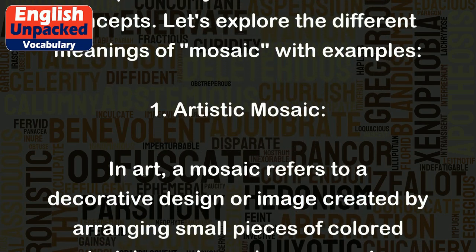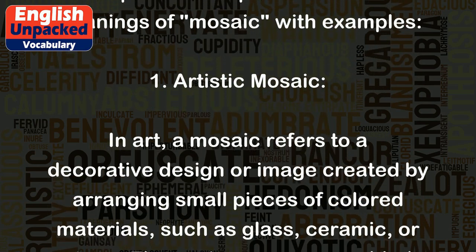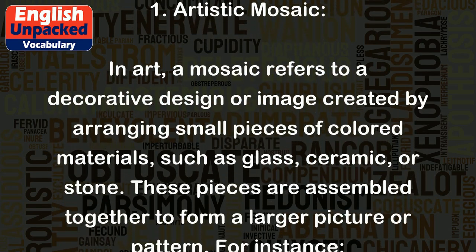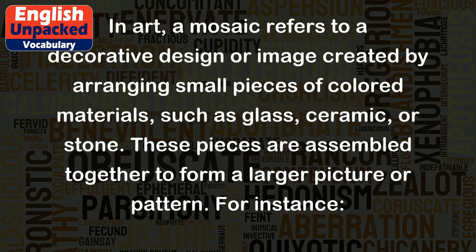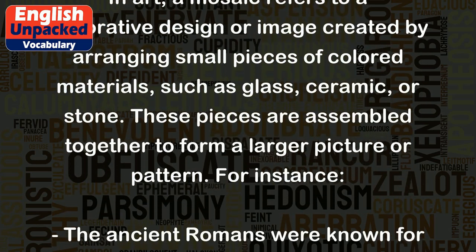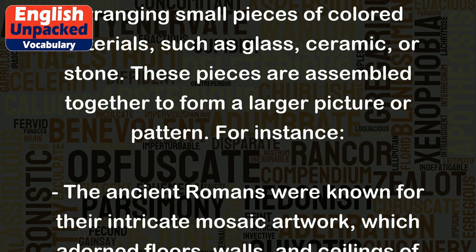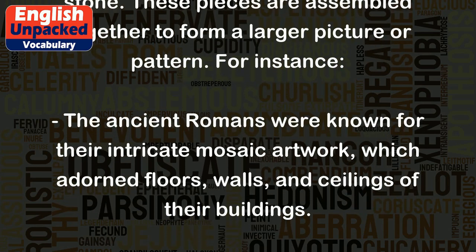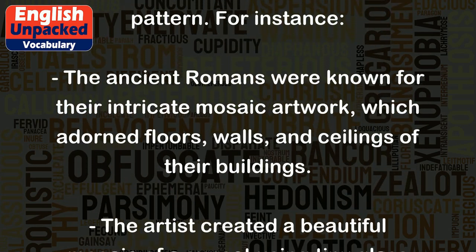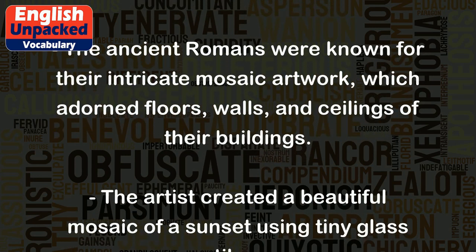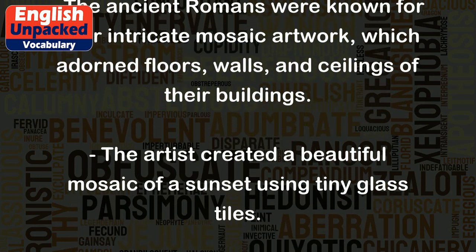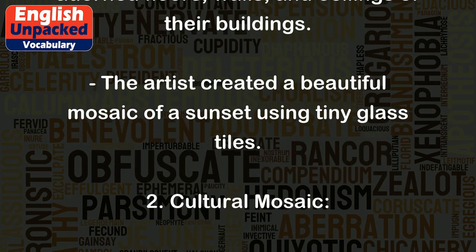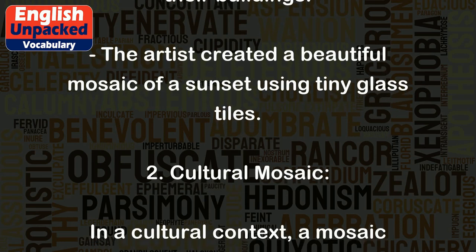1. Artistic Mosaic. In art, a mosaic refers to a decorative design or image created by arranging small pieces of colored materials, such as glass, ceramic, or stone. These pieces are assembled together to form a larger picture or pattern. For instance, the ancient Romans were known for their intricate mosaic artwork, which adorned floors, walls, and ceilings of their buildings. The artist created a beautiful mosaic of a sunset using tiny glass tiles.